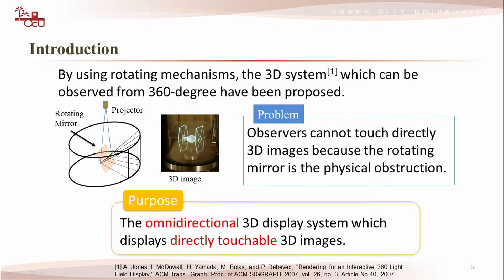This system can have high-quality images, but there is a problem. The observer cannot touch directly the 3D images because the rotating mirror is a physical obstruction. In this study, to overcome this problem, we proposed a system which controlled the light rays by using a combination of the holographic micro-lens array and an LCD.